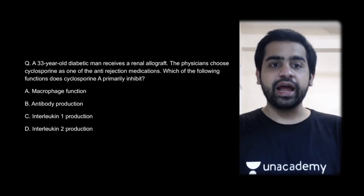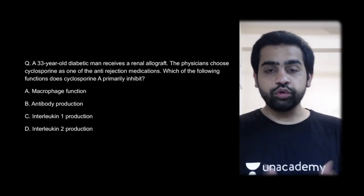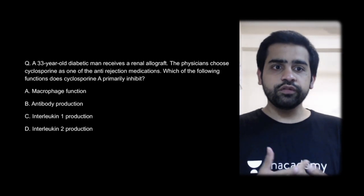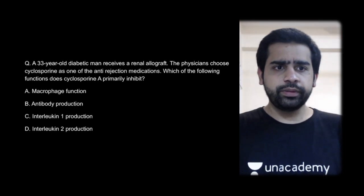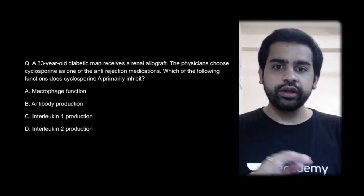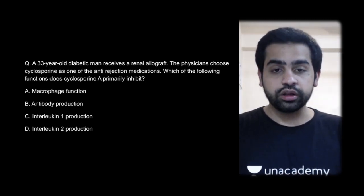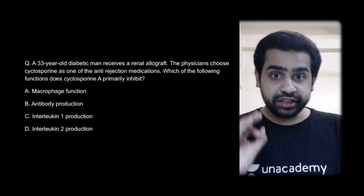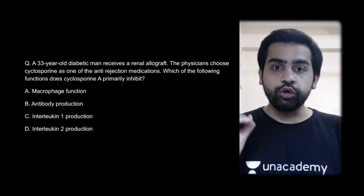Next question: a 33-year-old diabetic man receives a renal allograft. The physician starts the patient on cyclosporine — an immunosuppressant. What is its mechanism of action? Cyclosporine and tacrolimus are calcineurin inhibitors. They act by inhibiting interleukin-2 production — not by interfering with the functionality of interleukin-2, but by inhibiting its production.